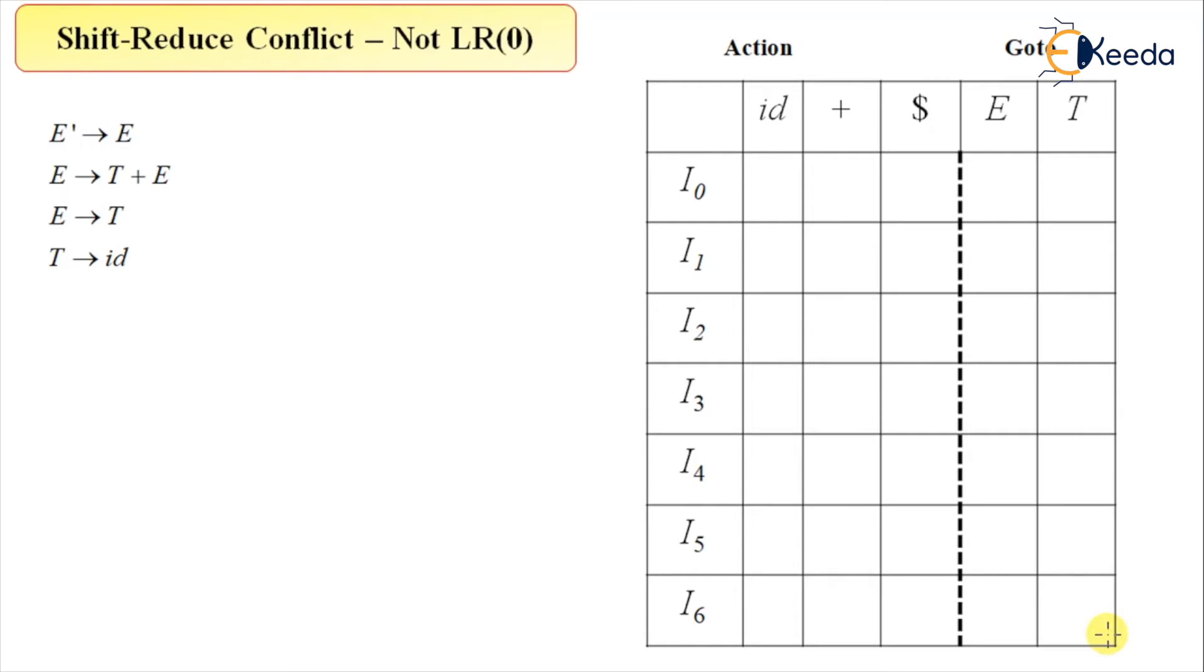Hi everyone, the next topic that we are discussing here is a conflicting situation in table. So we have already seen this table and we find that both of them, both the examples, the table that we constructed is in LR0 because there was no conflicting situation.